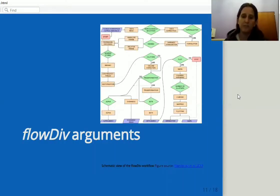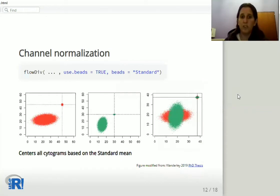Some FlowDiv arguments. UseBix2 activates the panel normalization step.